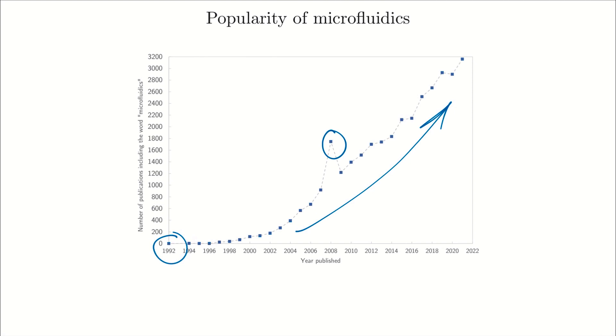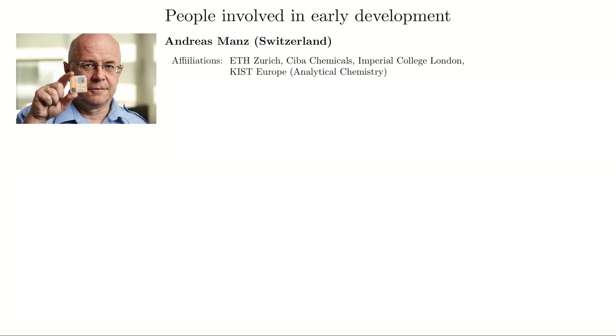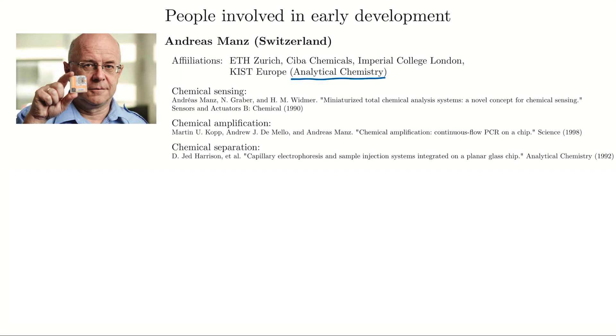Now I'll talk about some people involved in early development — just a brief introduction. We start with Andreas Menz in Switzerland. He's an analytical chemist, and some of his early publications focused on chemical sensing, chemical amplification, and chemical separation. We can see chemists realizing that if we can manipulate fluids on the small scale, it opens a lot of doors in terms of chemical processing and chemical production.